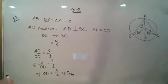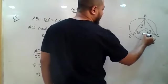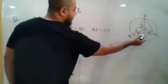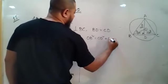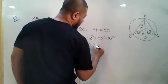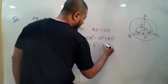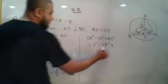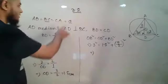Since AD is perpendicular to BC, we have a right-angle triangle and can apply the Pythagorean theorem. The hypotenuse is OB, so OB² = OD² + BD². Substituting: 3² = (1.5)² + (a/2)², that is 9 = 2.25 + a²/4.